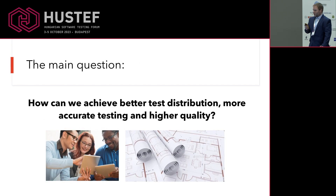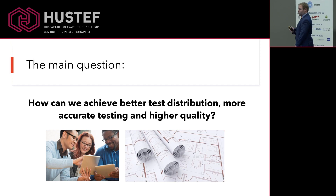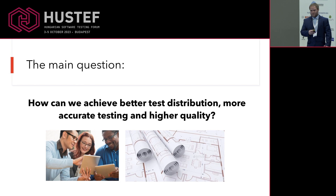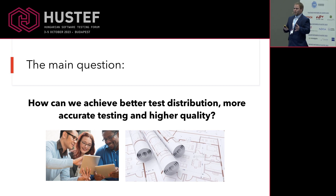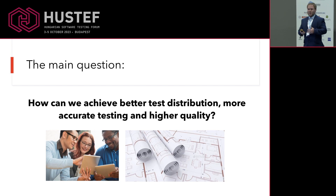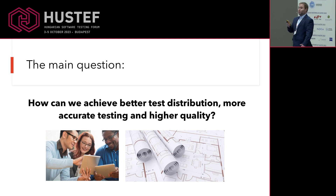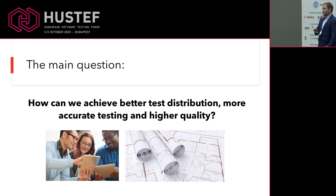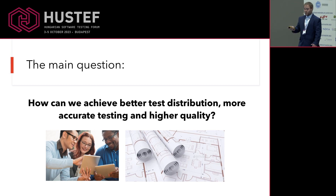So we reached the main question: how can we achieve better test distribution, more accurate testing, and higher quality overall? I will give you a very traditional answer — communication and planning. If you know your application, if you know your requirements, if you know your user expectations, you can have more focused testing, much better coverage, and much better effort alignment based on these.